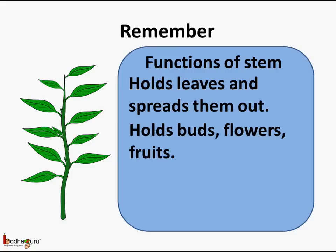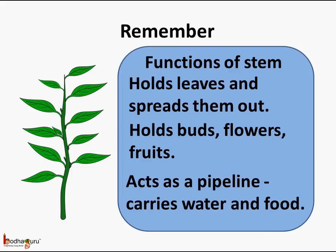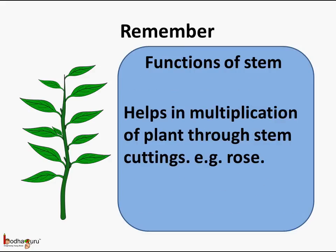Fruits, etc. The stem also acts as a pipeline and carries water and food to the other parts of the plants. And lastly, the stem also helps in the multiplication of plants through stem cuttings.